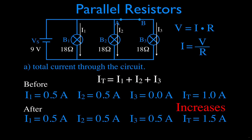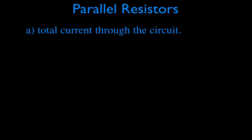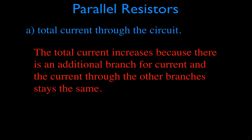We can also explain that in our own words without using the word 'parallel.' The total current increases because there's an additional branch for current when we close the switch. The current through the other branches stays the same, and the total current is the sum of the currents through each branch.